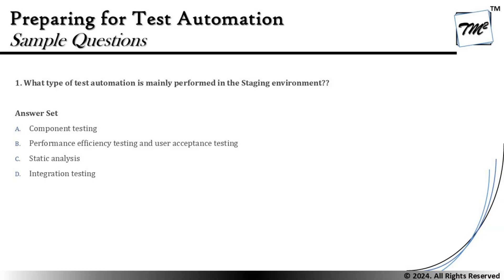The very first question is number one from chapter two: what type of test automation is mainly performed in the staging environment? We should recall the topics we recently covered. This type of topic may have inverse or direct questions — sometimes they ask what activities or test levels are best organized in which environment, and other times they give you the activity and ask which environment is most recommended.